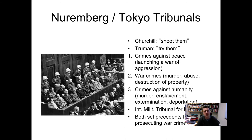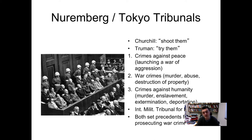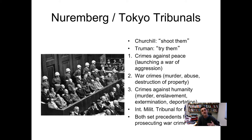The Nuremberg and Tokyo trials were important milestones for the contemporary understanding of human rights. After the Second World War, Prime Minister Churchill wanted to simply shoot all the Nazi upper echelon, but Truman insisted on trying them. They were charged with three different crimes: crimes against peace — launching a war of aggression; war crimes — murder, abuse, destruction of property; and crimes against humanity — murder, enslavement, extermination, and deportation. We also had the International Military Tribunal for the Far East, where Imperial Japan and its government officials were charged with war crimes. Both trials set the precedent for how war crimes are being prosecuted to this day.